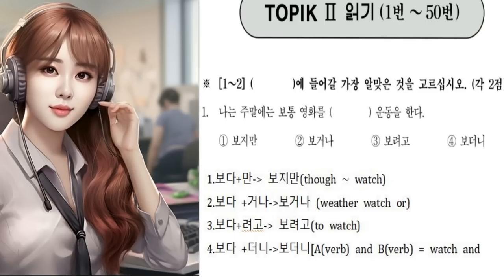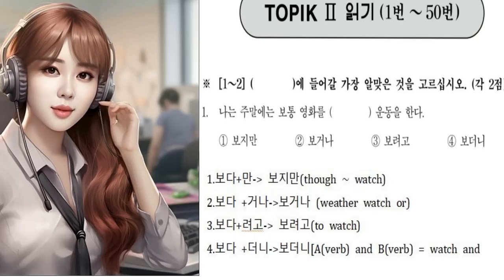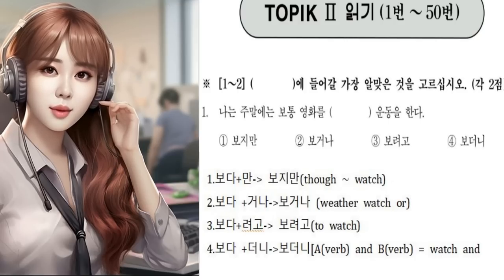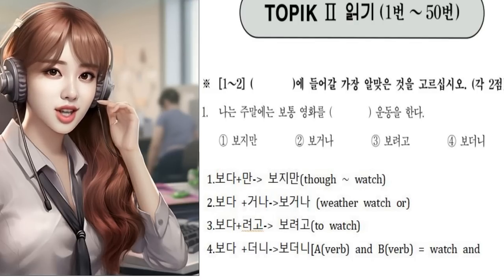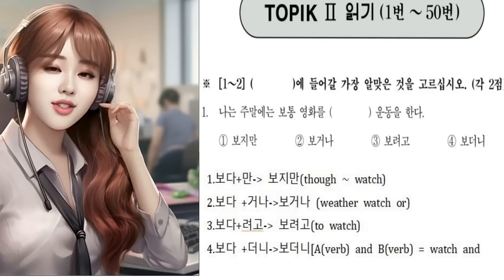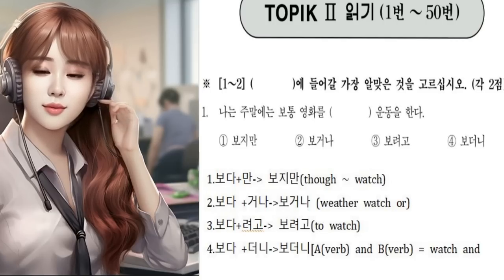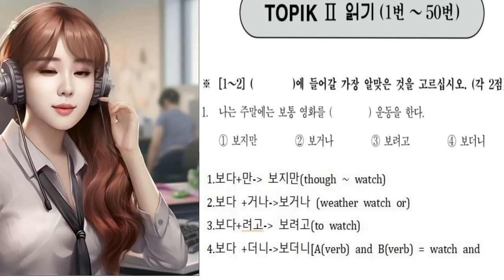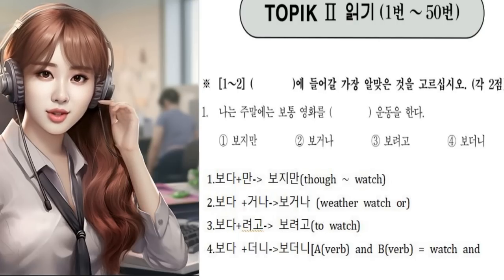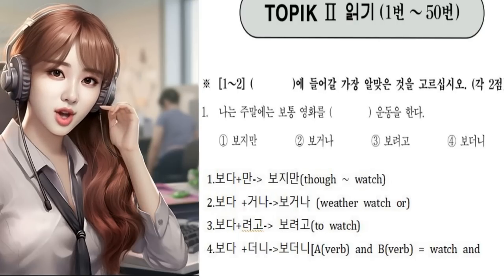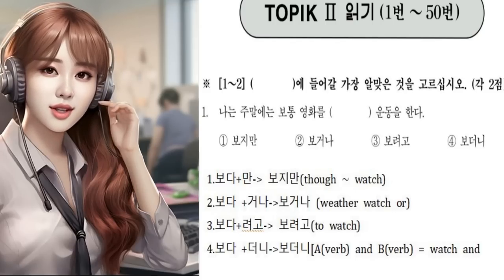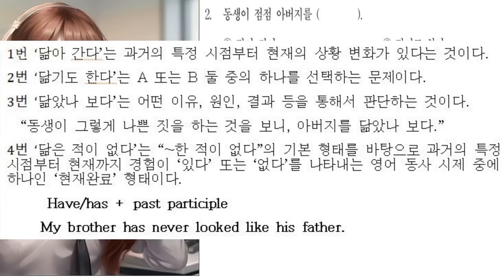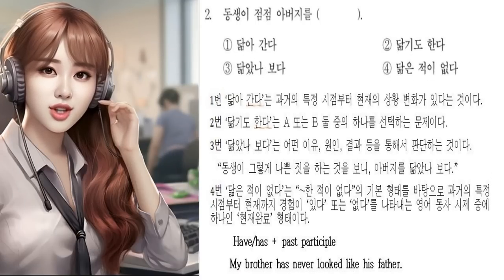Key point minus two: the following are four basic types of verbs that discard the ending dao and combine with other morphemes when the verb additionally appears in the middle of the sentence. In order to solve problems related to Korean verbs in the future, it is necessary to remember the above options one to four. It is better if you memorize it by comparing it with English. The four variations apply to all verbs in Korean. Therefore, the answer is number two, bogona.